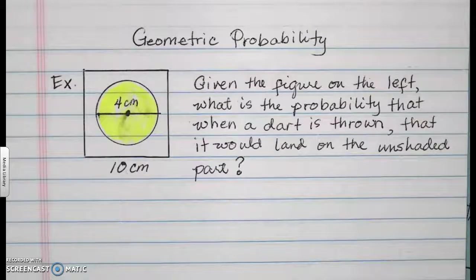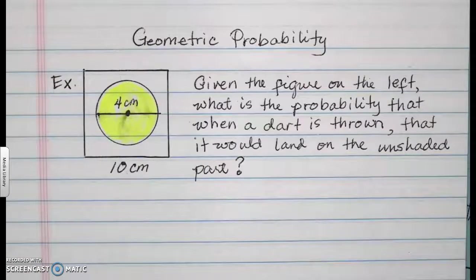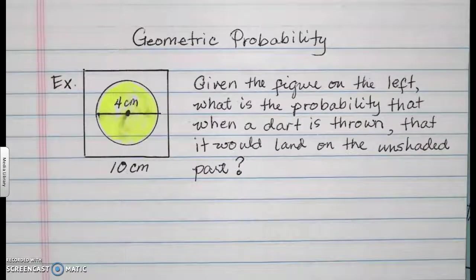Our topic for today is about geometric probability. Given the example on the left, what is the probability that when a dart is thrown, that it would land on the unshaded part?